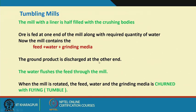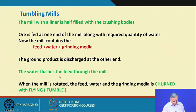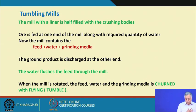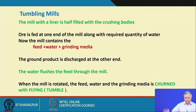The ground product is discharged at the other end. The water flushes the feed through the mill — it helps transport the ground materials to the discharge end. If it is totally dry material, material flow becomes a problem. But when you have water and rotation, and some inclination of the mill, the flow of water carries the particles, which helps in the throughput and discharge of the mill product.